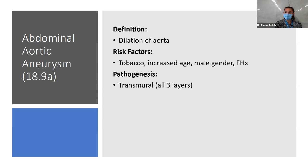Giant cell arteritis (temporal arteritis): affects branches of the carotid artery. More common in elderly females, associated with polymyalgia rheumatica. Clinical characteristics: unilateral headache, temporal artery tenderness, and jaw claudication. Complication: blindness due to ischemia of the optic nerve. Pathogenesis is inflammatory — you see elevated ESR and increased cytokine formation affecting that specific artery.